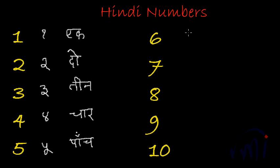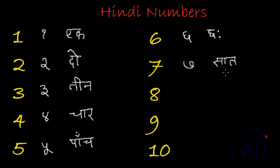This is 6 and it is called chhey, written as cha. This is 7 and it is called saat, written as sa-ta — saat. This is 8 and it is called aath, written as a-ta — aath.